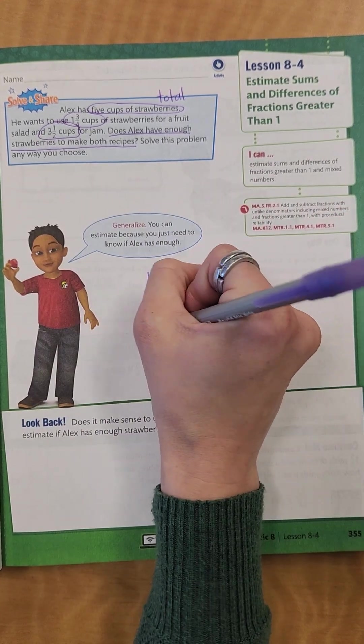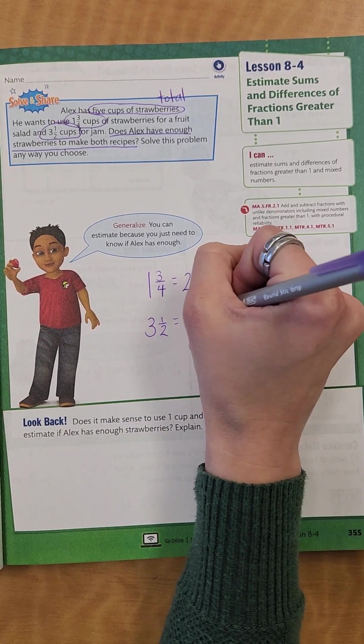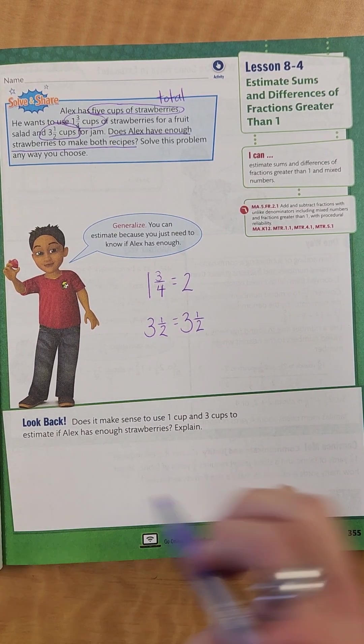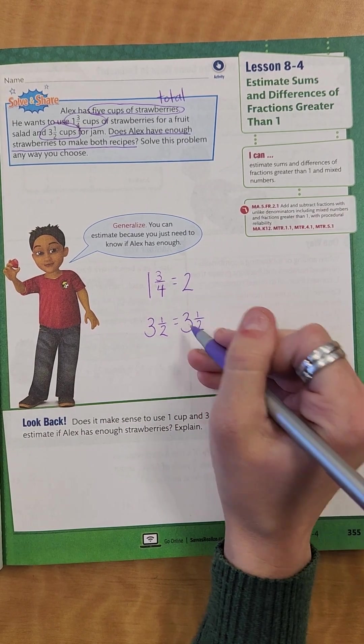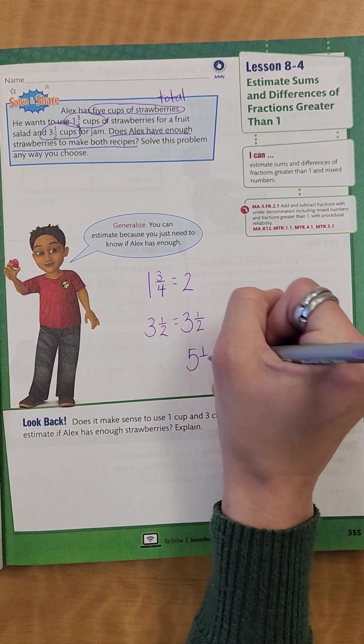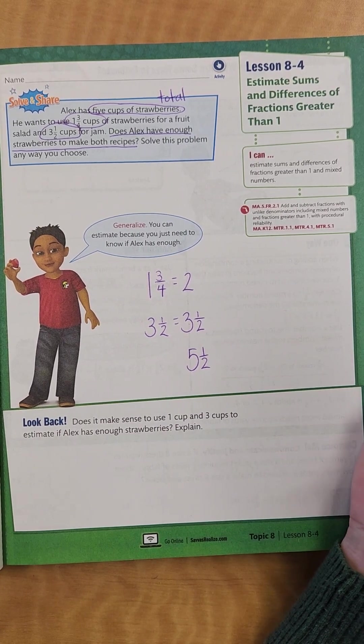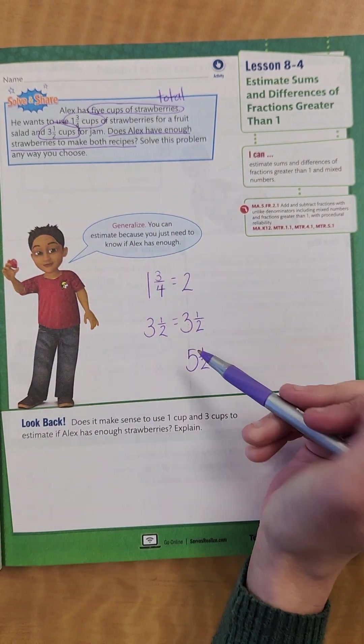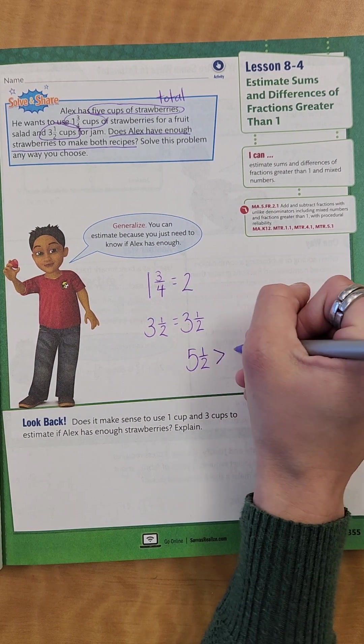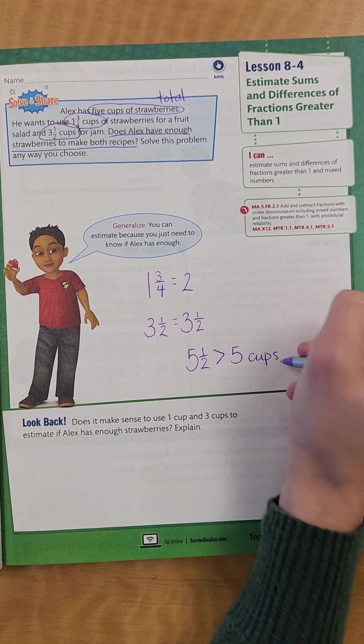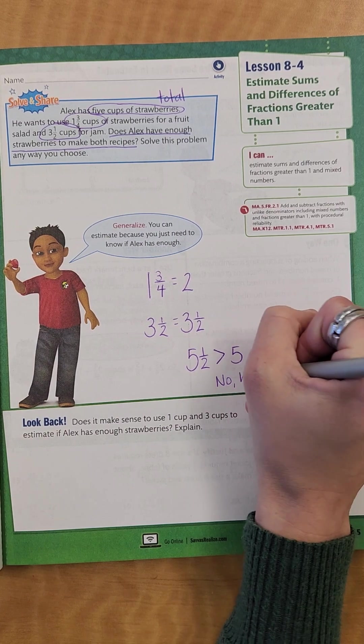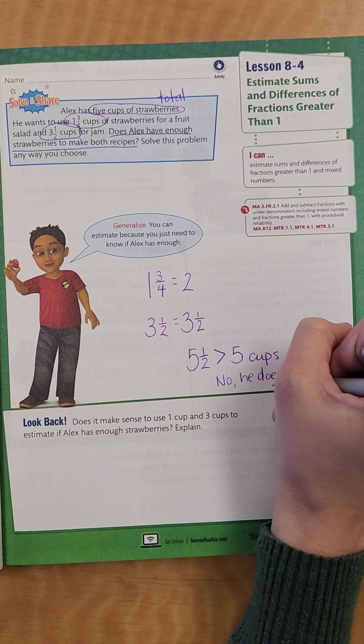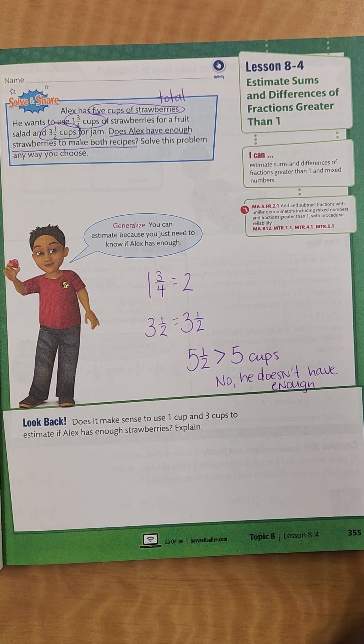And then I have 3 and one half. I could probably keep that as 3 and one half because that is one of those unit fractions. So now, if I have 2 plus 3 and one half, that's going to give me 5 and a half. So that's about how much he needs. So is he going to have enough? Well, he's starting with 5 cups of strawberries. So does he have enough? No, because this is greater than 5 cups. So no, he doesn't have enough.